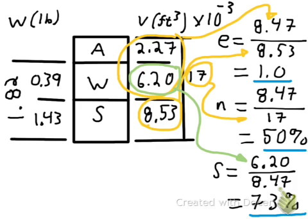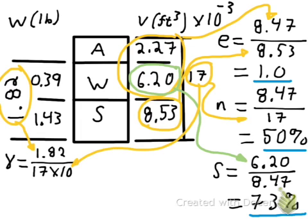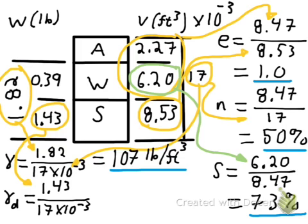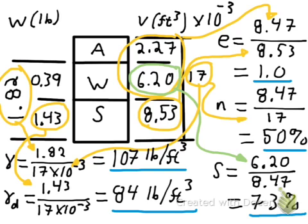For the unit weight calculations, we do need to include the 10⁻³ factor to get the units correct. The total unit weight equals the total weight of 1.82 pounds divided by the total volume of 17 × 10⁻³ cubic feet, giving a total unit weight of 107 pounds per cubic foot. The dry unit weight is a theoretical value — it's the unit weight if we could magically remove all the water without the sample shrinking. It equals the weight of solids, 1.43 pounds, divided by the total volume, 17 × 10⁻³, giving a dry unit weight of 84 pounds per cubic foot.